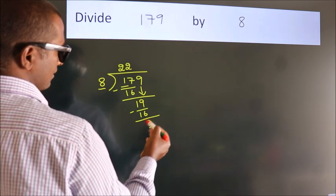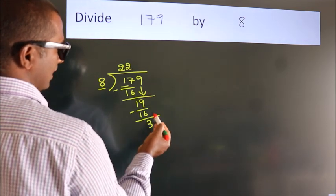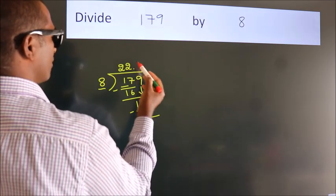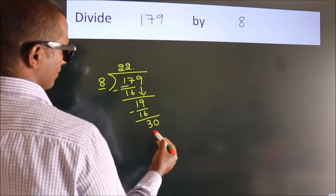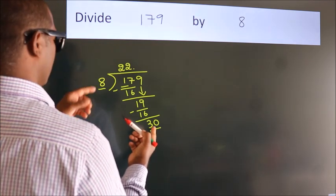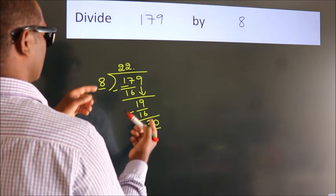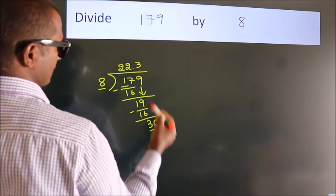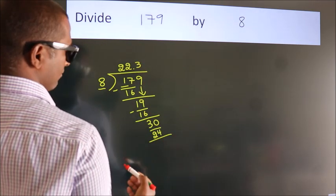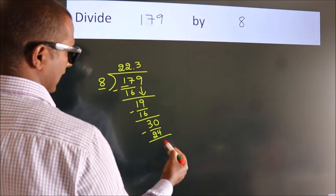After this, no more numbers to bring down. So what we do is, we put a dot, take 0. So 30. A number close to 30 in the 8 table is 8 threes, 24. Now we subtract, we get 6.